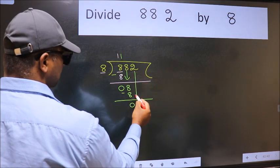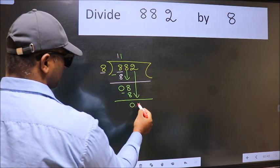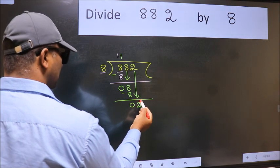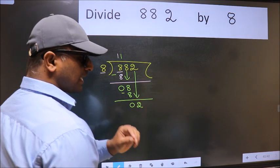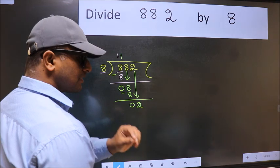After this, bring down the beside number. So, 2 down. After this step, the mistake happens. And the mistake is this.